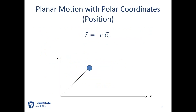Starting with position: we're going to have our position vector r, and that's going to be some distance r away from our origin point in the ur direction. That ur direction is whatever direction it is from the observation point to the particle we're looking at. So we have some angle theta for this two-dimensional system. The ur vector is the direction pointing towards the particle. The second direction we have is the u-theta direction, which is 90 degrees counterclockwise from whatever the ur direction is.